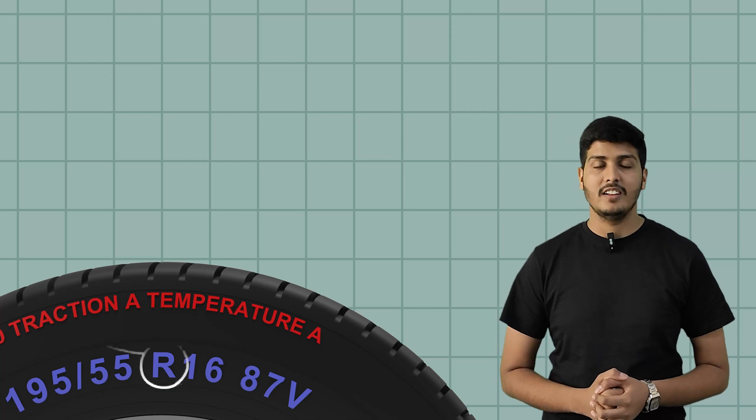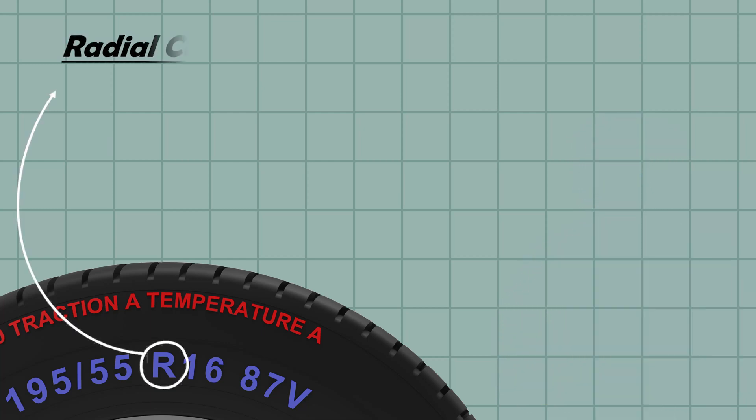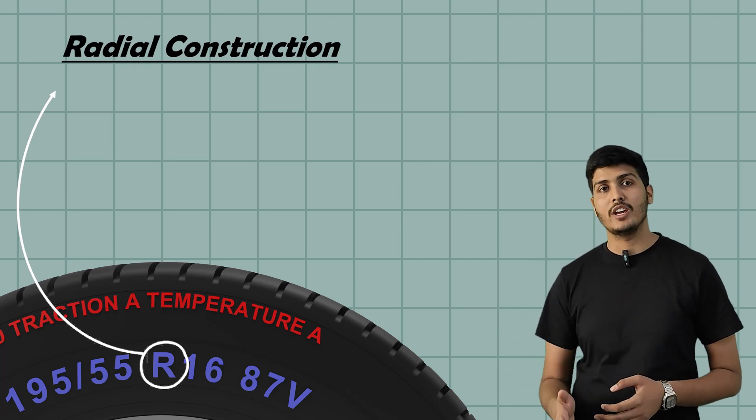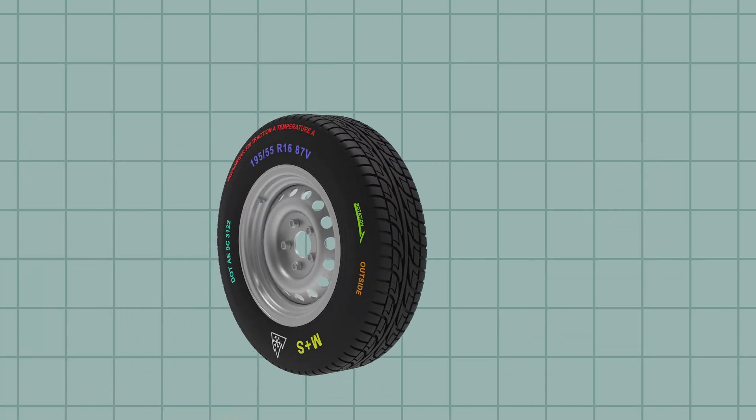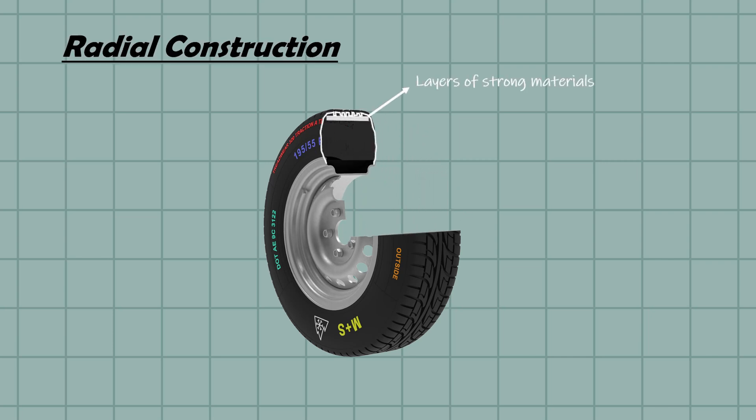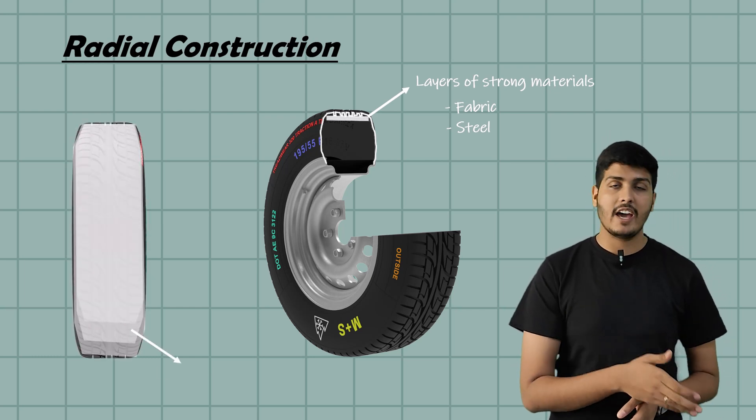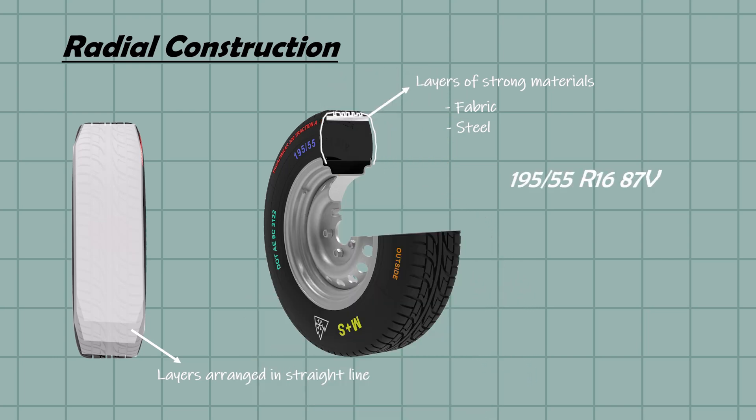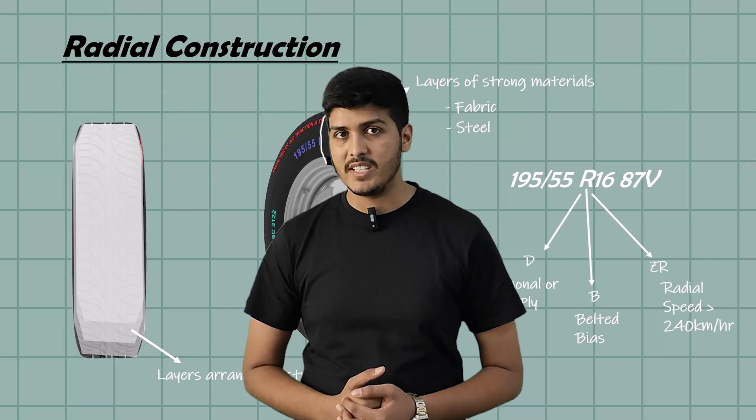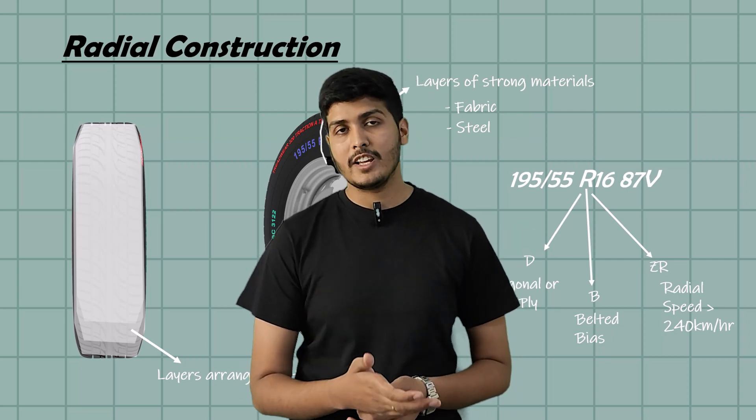After aspect ratio, we have this letter R and this is not for rough roads or racing like some people might think. R stands for radial construction which is the most common tire used today in passenger vehicles, bikes and even trucks. Now in simple terms, inside every tire there are layers of strong materials like fabric or steel that give the tire its strength and shape. In radial tires, these layers are arranged in straight lines from one side of tire to other. You might also come across other letters. D or dash stands for diagonal or bias ply construction used mostly in old vehicles or some off-road tires. B means belted bias which is rarely used today. ZR usually appears in high performance tires and it also means radial but specifically built for speeds over 240 kilometers per hour. But for most regular cars and bikes, R is what you will see and it's what gives you better grip, smoother ride and longer tire life.